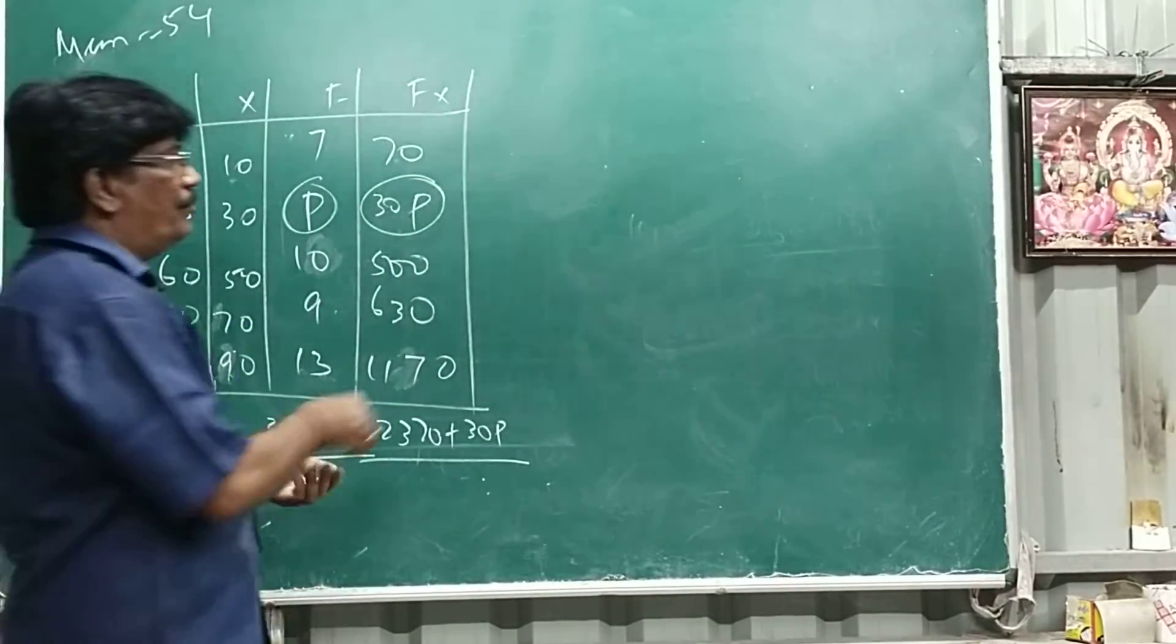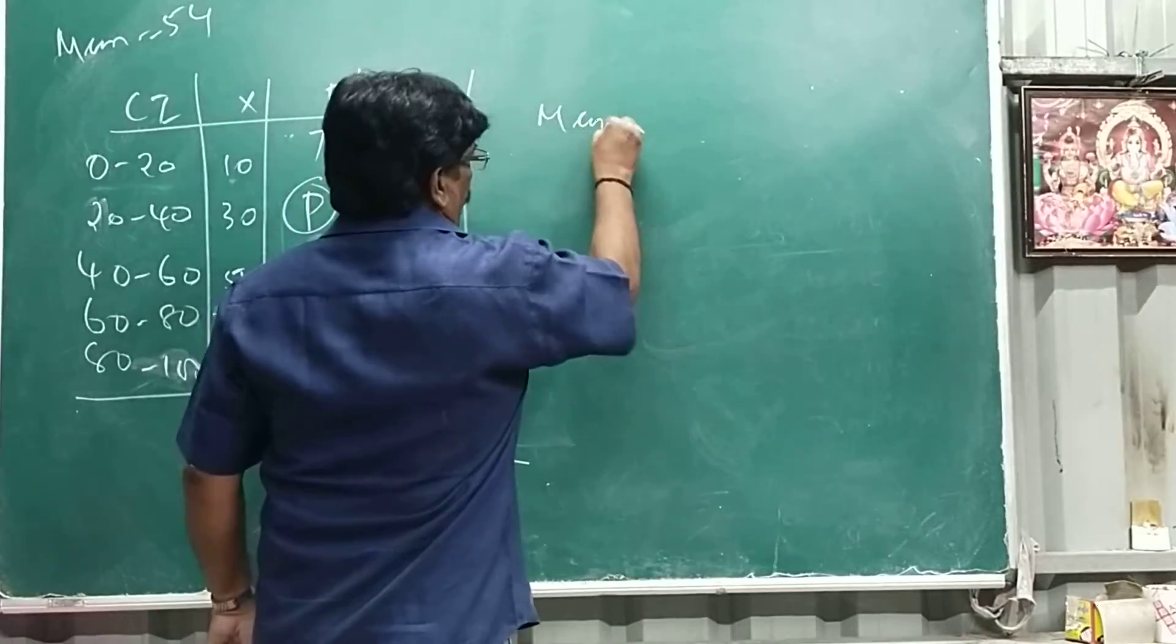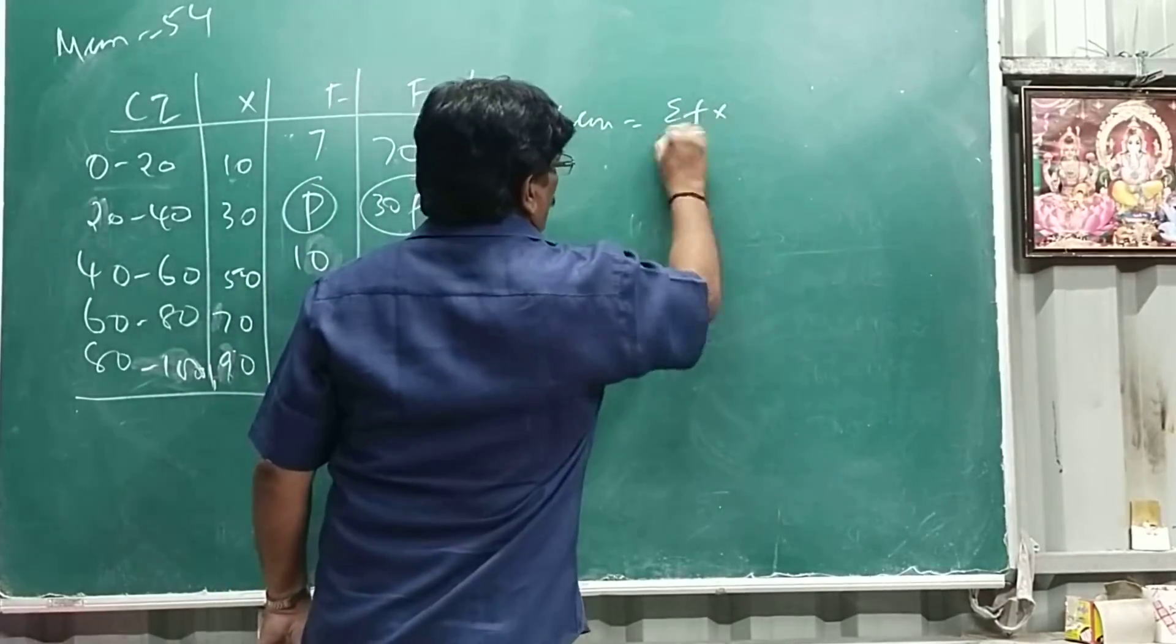So mean is given 54, so formula mean equals Sigma Fx by Sigma F.